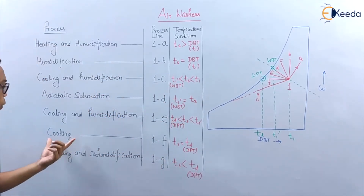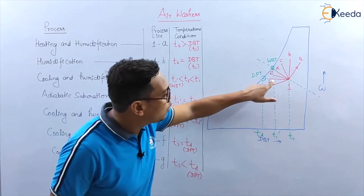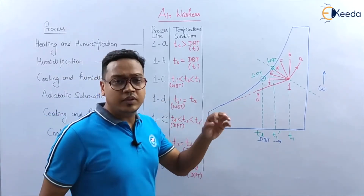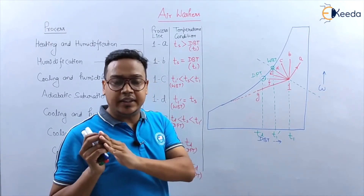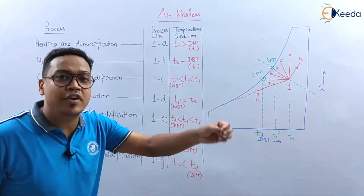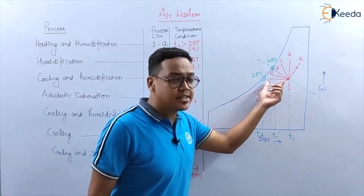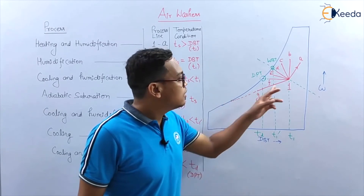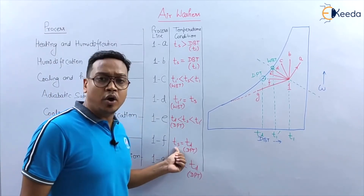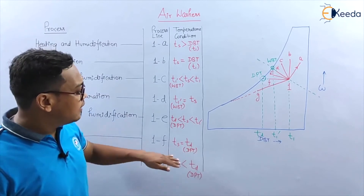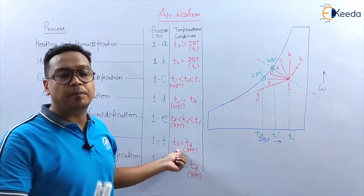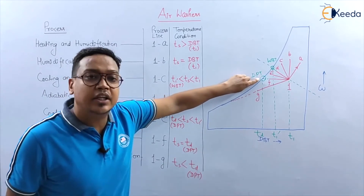Let's see the next process: cooling — process 1 to F. In this case, temperature decreases at constant omega, meaning we are removing heat at constant moisture content. This is a sensible cooling process. The surface temperature of water should be equal to the dew point temperature.